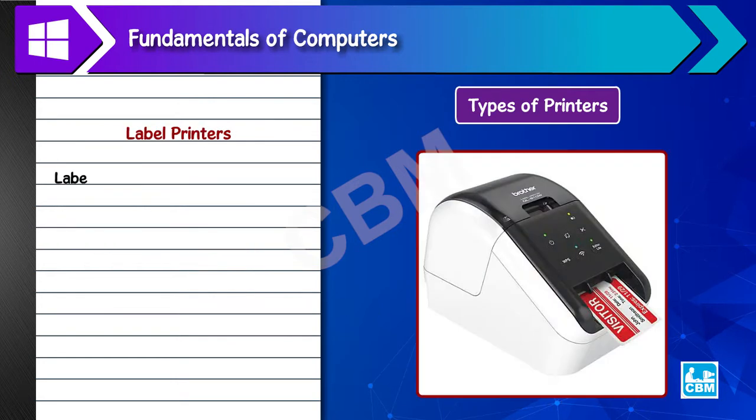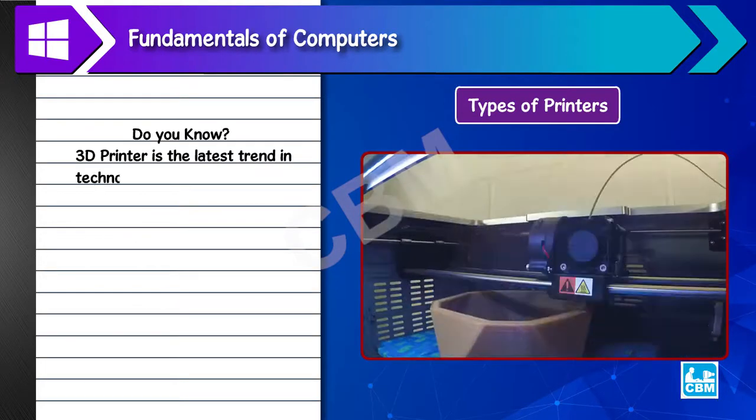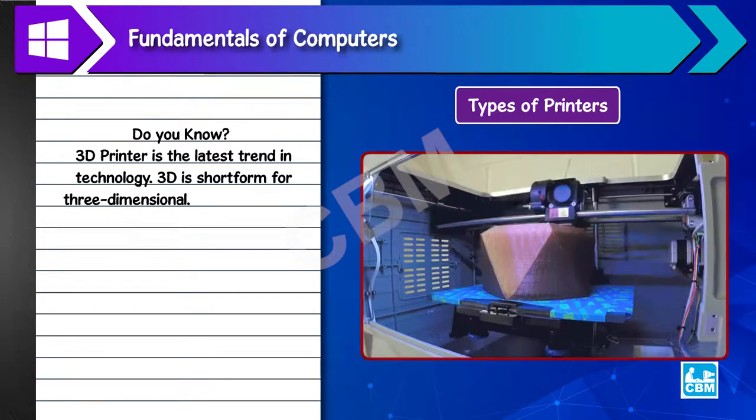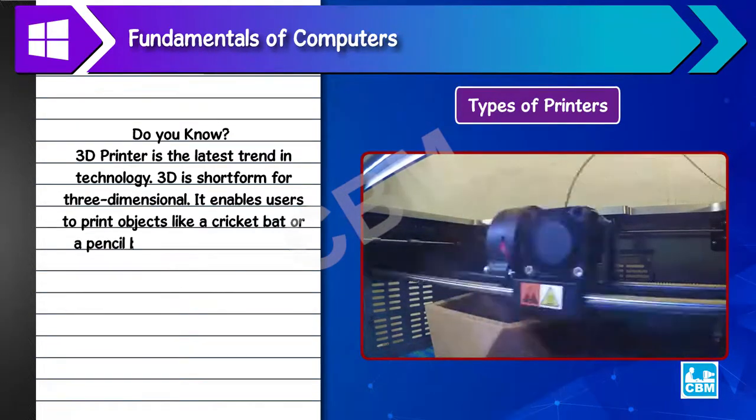Label printers - Label printers are the smartest way to print labels one at a time. Do you know? 3D printer is the latest trend in technology. 3D is short form for three dimensional. It enables users to print objects like a cricket bat or a pencil box after designing the same on the computer.